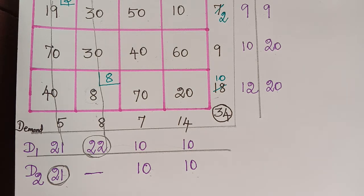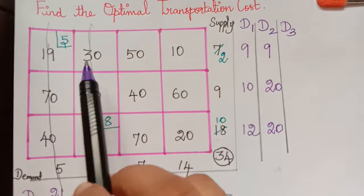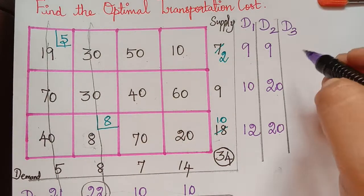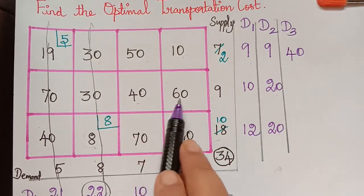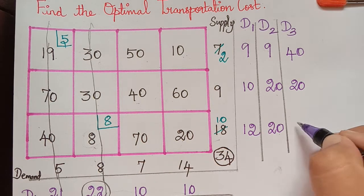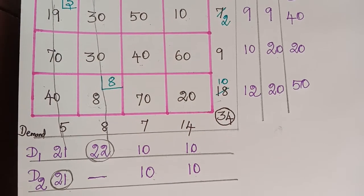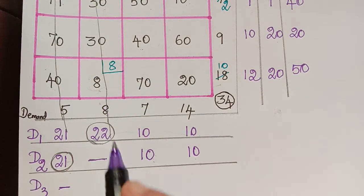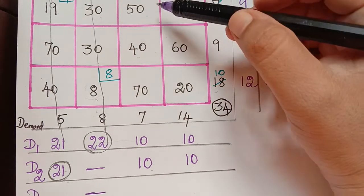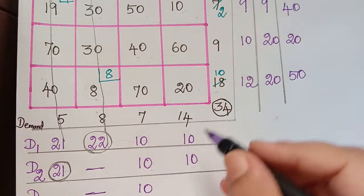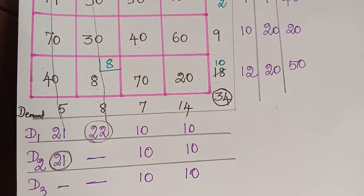Now we find D3. With columns 1 and 2 struck off, row 1 has two elements left: 50 and 10, giving difference 40. Row 2: 60 minus 40 gives 20. Row 3: 70 minus 20 gives 50. For columns: columns 1 and 2 are hyphenated. Column 3: two least are 40 and 50, difference is 10. Column 4: two least are 20 and 10, difference is 10.